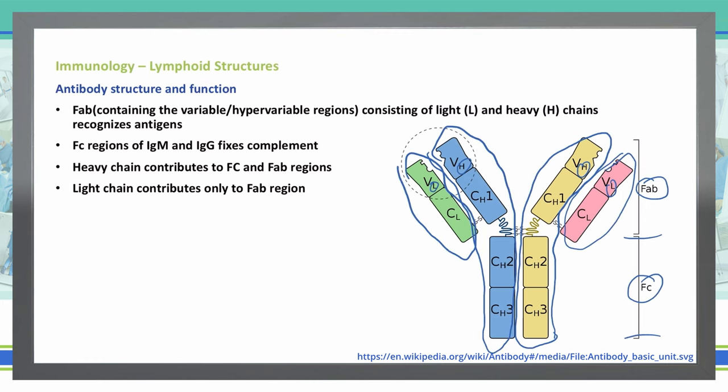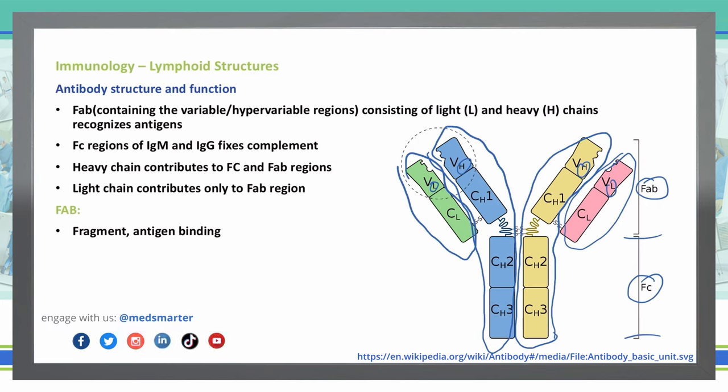What does Fab mean? Fab stands for Fragment Antigen Binding. That tells you that this region up here is where the antigens are going to bind. So if you can remember Fragment Antigen Binding, that's where binding of the antigens occurs, which will then go with the Fc region to present those particular antigens to IgM, IgG, and fix complement.